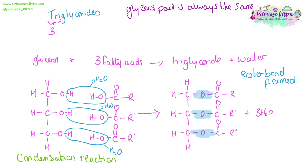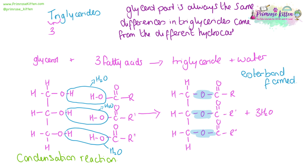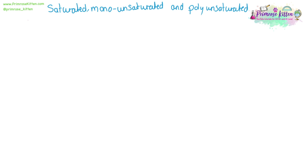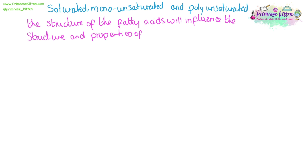The glycerol part is always the same — the structure of that doesn't change — and the differences come from the fatty acids. The differences in the R group, because each fatty acid chain can be different and there are over 70 different fatty acids, leads to a wide variety of triglycerides that can be produced. These different fatty acids means that we can get saturated, monounsaturated, and polyunsaturated triglycerides.